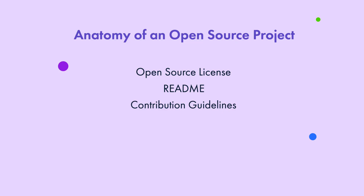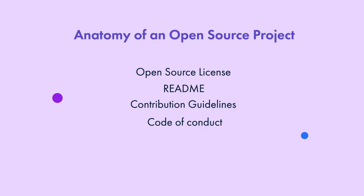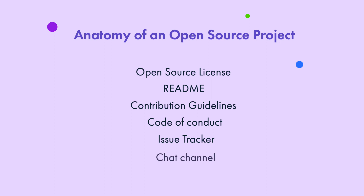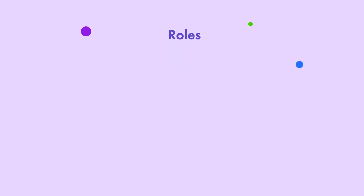Then there is the code of conduct documentation - this contains community guidelines and rules and will help you know how to communicate and get along with your fellow contributors. There is also an issue tracker where you keep track of all the work that's done on GitHub and where the development happens. And there will most likely be a chat channel such as on Slack or Discord or another forum where you can have synchronous chats with other contributors.